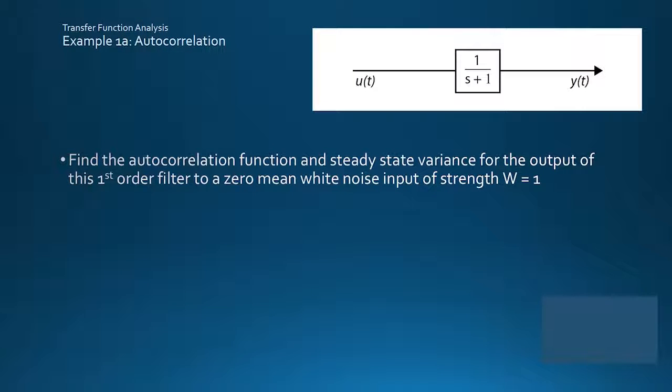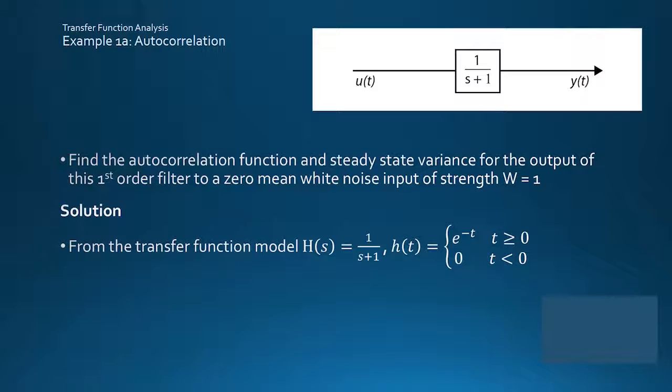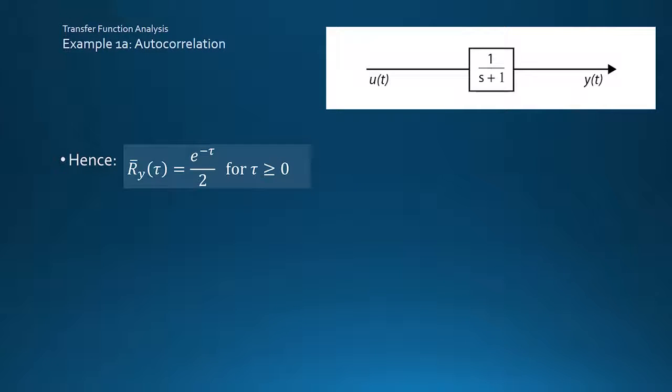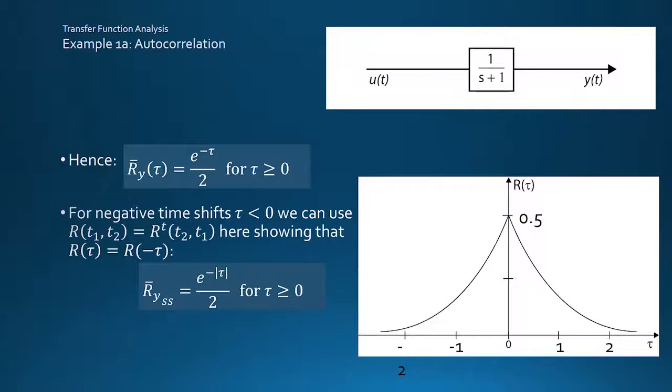Taking a first-order low-pass filter as an example of applying these formulas, the inverse transform of 1 over s plus 1 gives an impulse response of e to the minus t, valid for time greater than zero. Putting this impulse response into the formula for autocorrelation, along with the unity noise strength input, taking the e to the minus tau out of the integral, and integrating the zeta term gives this result. But the autocorrelation function is two-sided, and here we can use the matrix transpose trait to fill in the negative time half. And finally, at zero time shift, we get the variance of the output at 0.5.